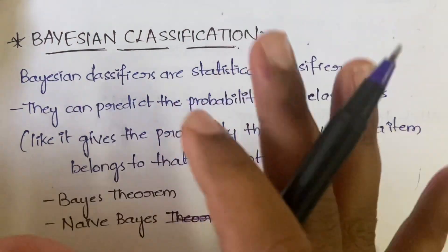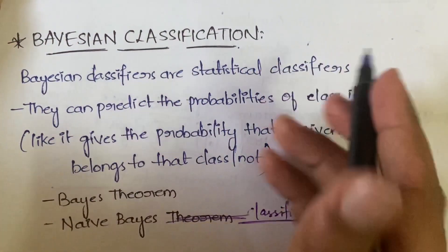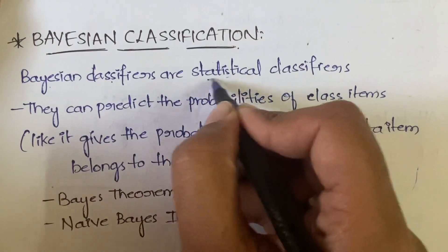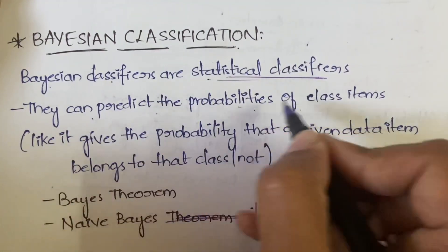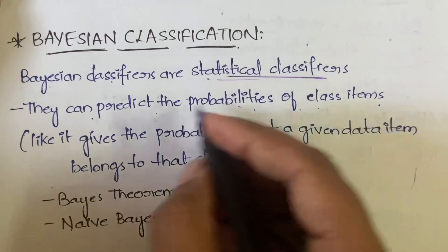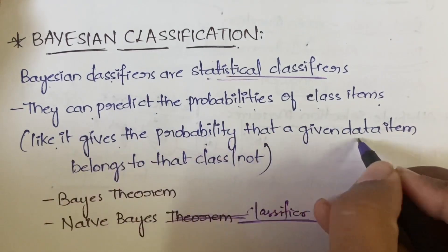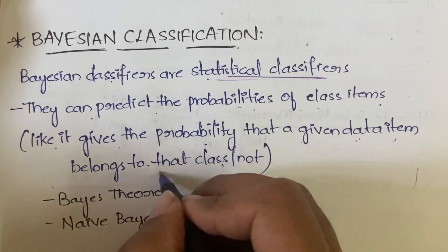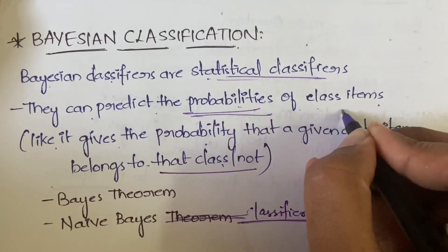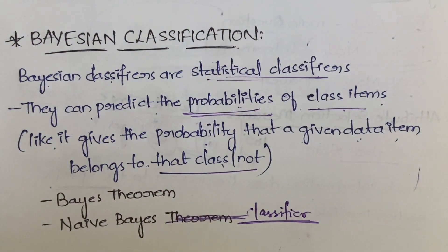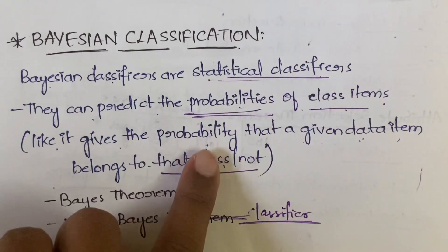So first of all, let me tell you what is Bayesian classification and why you need it. Bayesian classifiers are statistical classifiers which predict the probabilities of class items. It gives the probability that a given data item belongs to that class or not. Whichever item has the highest probability, you can choose that item. You can classify items based on their probabilities with the help of Bayesian classification.